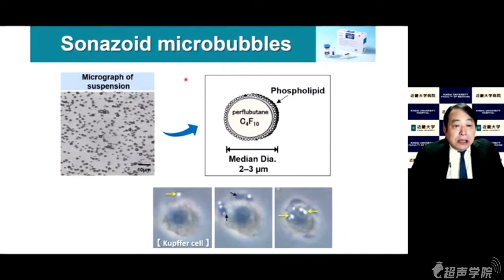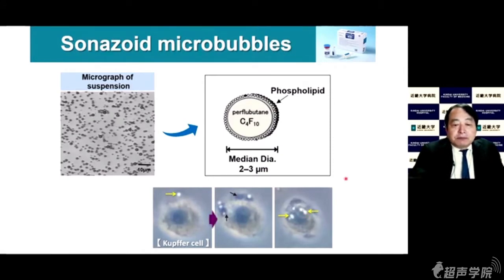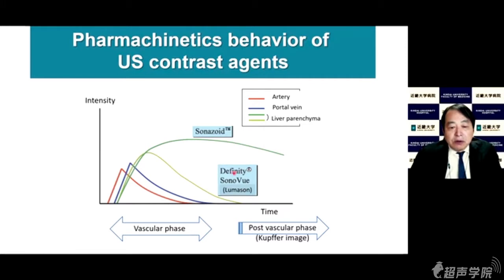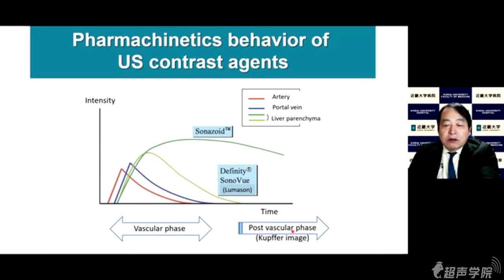Sonazoid is a perfluorocarbon covered by phospholipid, with a median diameter of 2 to 3 micrometers. This microbubble is taken up by Kupffer cells. This describes the pharmacokinetic behavior of ultrasound contrast agents. Unlike other contrast agents, Sonazoid is taken up by Kupffer cells, so there are two phases: vascular phase and also post-vascular phase, or Kupffer phase.